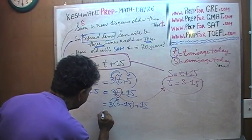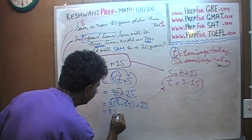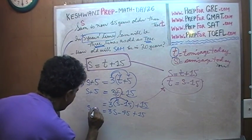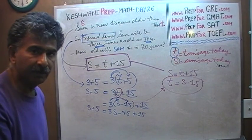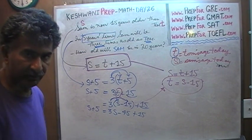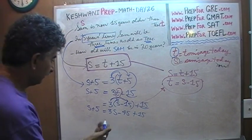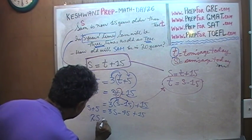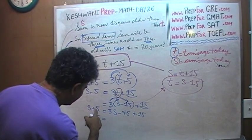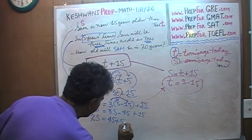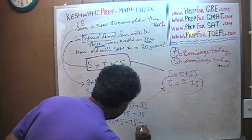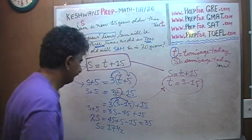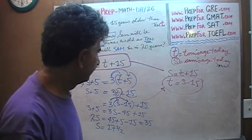Opening the parentheses: 3 times (S − 15) gives 3S − 45, plus 15. So we have S + 5 = 3S − 45 + 15, which is S + 5 = 3S − 30. Bringing the S terms together: subtracting S from both sides gives 2S, and moving constants gives 2S = 35. So S = 17.5 — Sam is 17 and a half years old today.